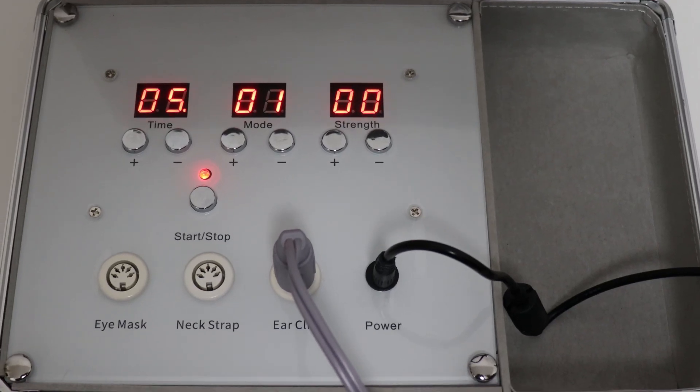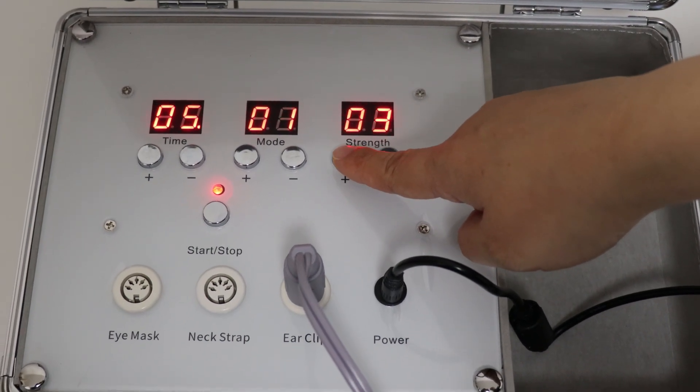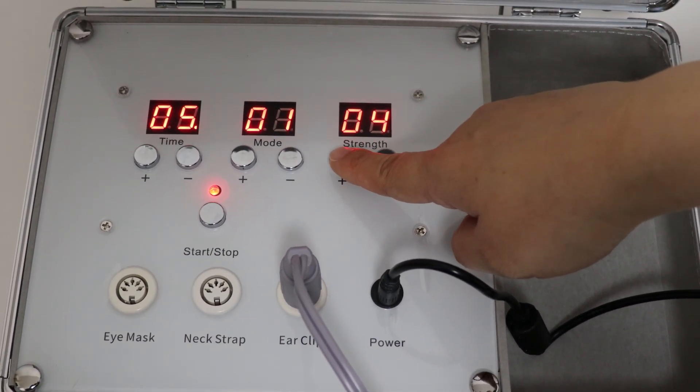Ensure that the metal side makes contact with the front of each earlobe. Gradually increase the strength from 0 to the level where you feel a slight prickling sensation.